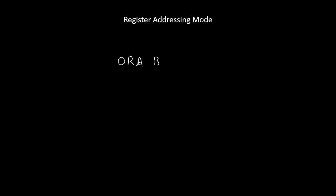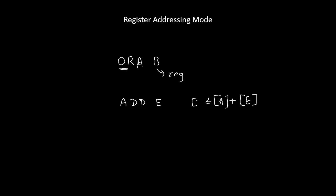Now, how do we identify register addressing mode? In it, the operand is going to be a register. For example, in ORA B, ORA is the opcode and B is the operand. ORA stands for OR accumulator with the B register. Since B is a register, its addressing mode is register addressing mode. Another example is ADD E, where ADD is the opcode and E is the operand. The content of the E register gets added to the accumulator content, and the result is stored in the accumulator. Since E is a register, its addressing mode is register addressing mode.